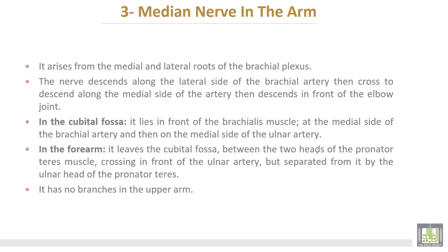The third nerve is the median nerve in the arm. It arises from the medial and lateral roots of the brachial plexus. The nerve descends along the lateral side of the brachial artery, then crosses to descend along the medial side of the brachial artery, before descending in front of the elbow joint.